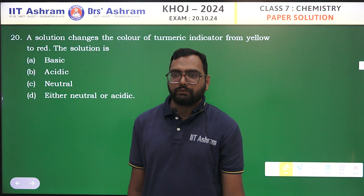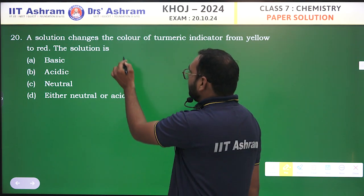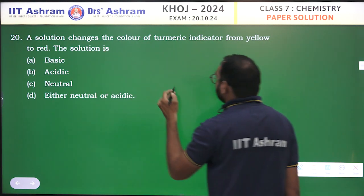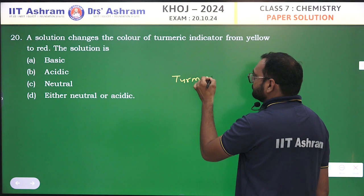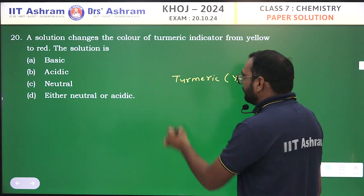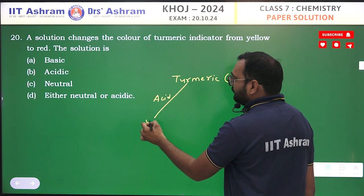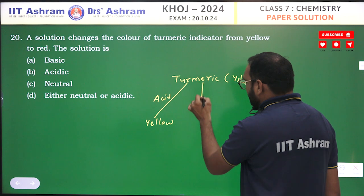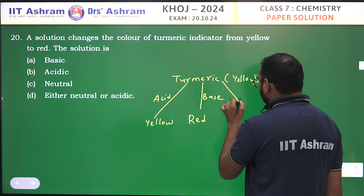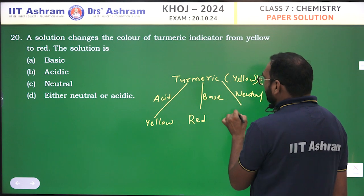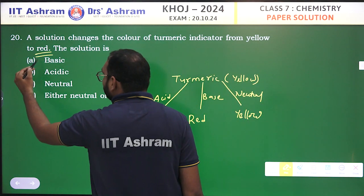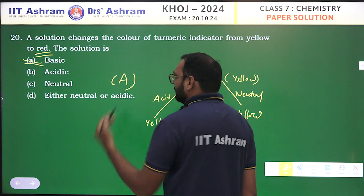Let's see the last question, number 20. A solution changes the color of turmeric indicator from yellow to red. The solution is — ? Turmeric is yellow in color. When dipped in an acid, it stays yellow. When dipped in a base, it turns red. When dipped in a neutral solution, it stays yellow. Since it turned red, it is a basic solution. Option A is the correct answer.